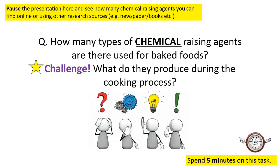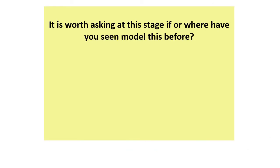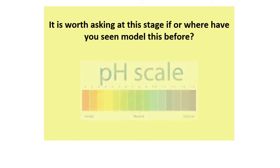Pause the presentation and research using online sources, newspapers, books, or recipe books. Find out how many types of chemical raising agents are used for baked goods, focusing specifically on chemical raising agents. What do they produce during the cooking process when being used? Spend five minutes on this task. It is also worth asking at this stage if or where you have seen this model before.